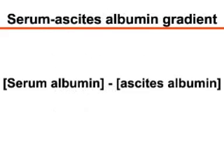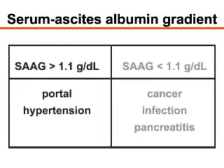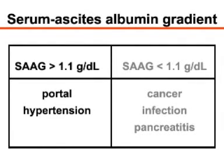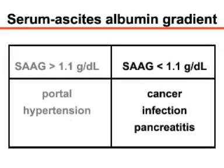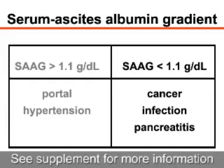Analysis of the fluid begins with a determination of the serum ascites albumin gradient. Gradients higher than 1.1 grams per deciliter indicate that the ascites is due to portal hypertension. Gradients less than 1.1 grams per deciliter suggest other causes such as cancer, infection, or pancreatitis.